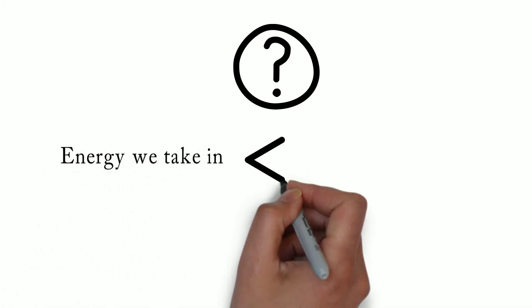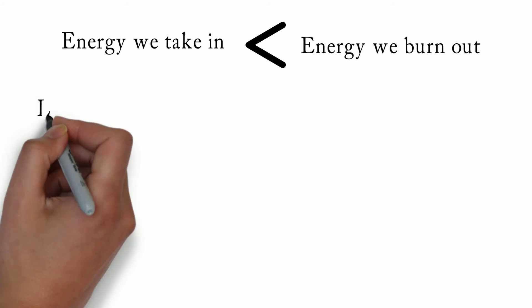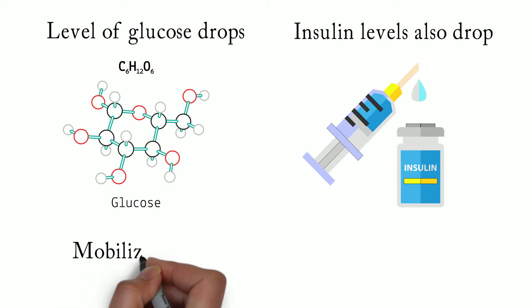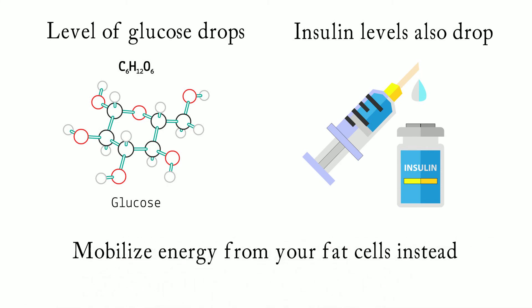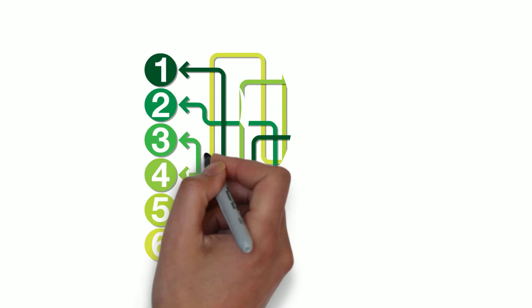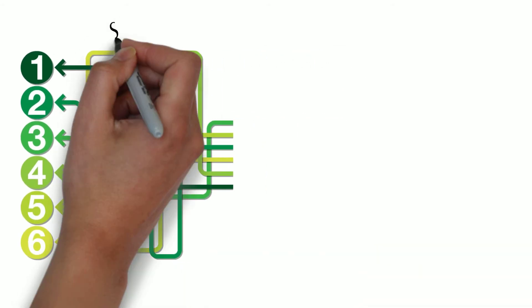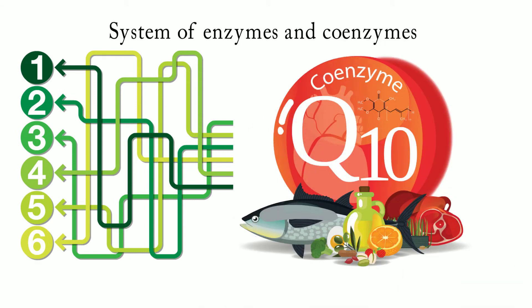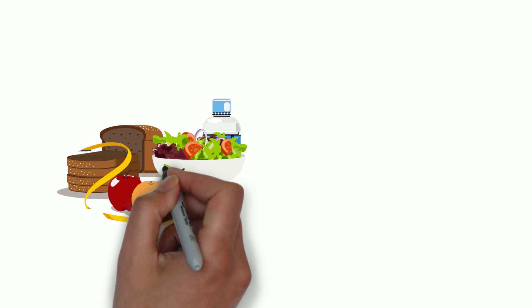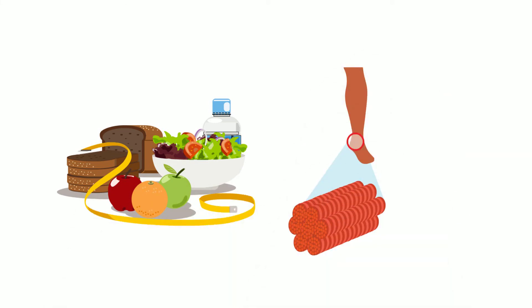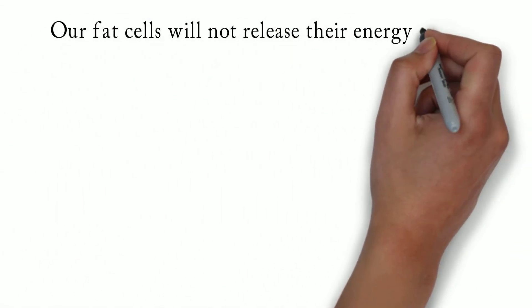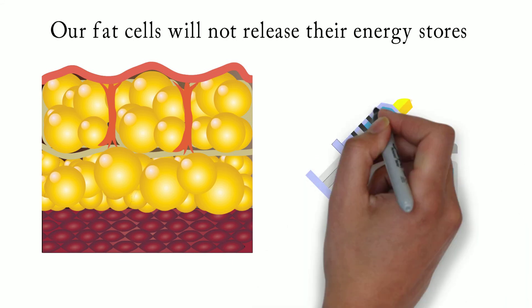But what happens when the energy we take in is less than the energy we burn out? Once the level of glucose present in the blood drops, insulin levels also drop, and the body starts to mobilize energy from your fat cells instead. It's a complex process triggered by a number of hormones, and carried out by a system of enzymes and coenzymes, first to unlock the fat cells, then to transport the fatty acids into your cells, and finally to break them down into smaller units for consumption.